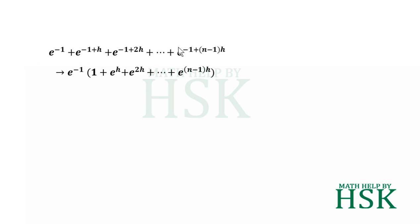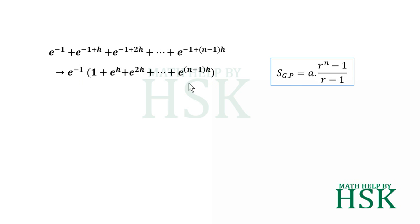This is a geometric progression. The ratio of any two consecutive terms — e to the power of 2h upon e to the power of h — is e to the power of h. So any term divided by the previous term gives e to the power of h, confirming it is a geometric progression. The sum of a GP is equal to a times r to the power of n minus 1, upon r minus 1, where a is the first term and r is the common ratio.